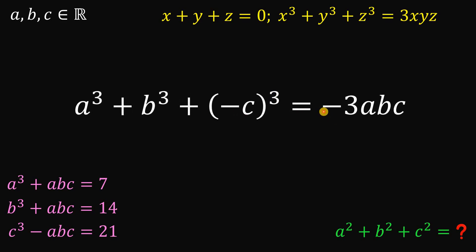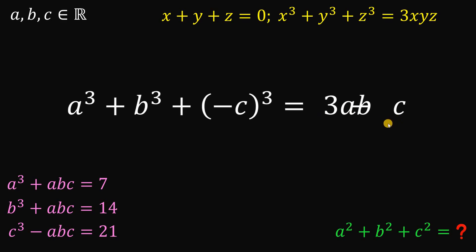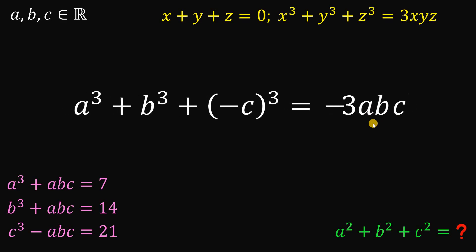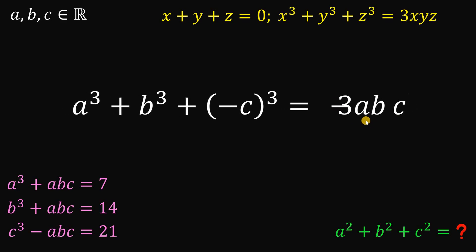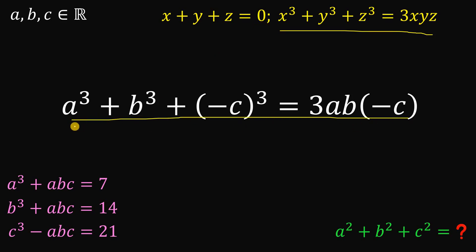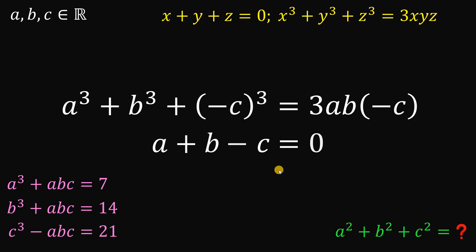Also, this negative sign we can put on the variable c. So this becomes negative 3abc. This now looks like the identity: if x cubed plus y cubed plus z cubed equals 3xyz, then x plus y plus z equals 0. So we can say that a plus b minus c equals 0, which means a plus b equals c.